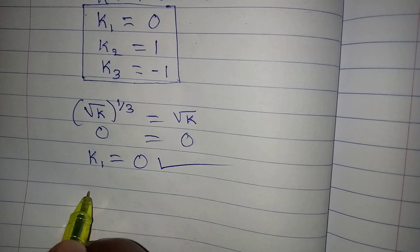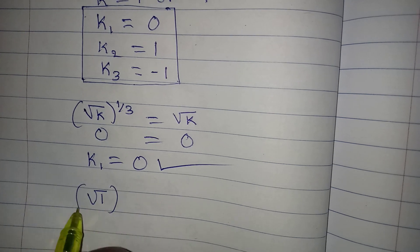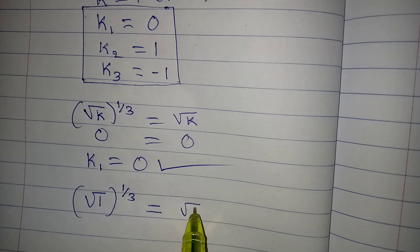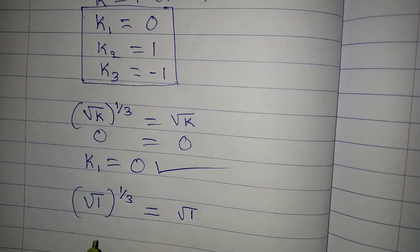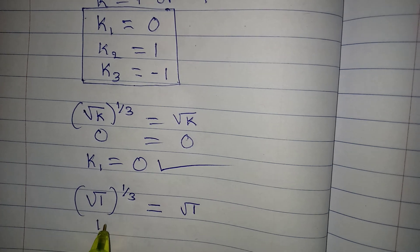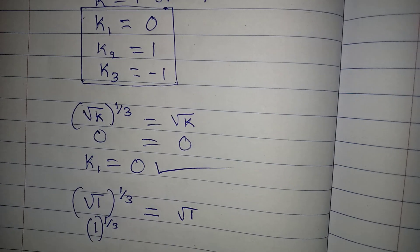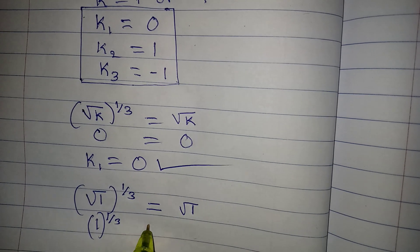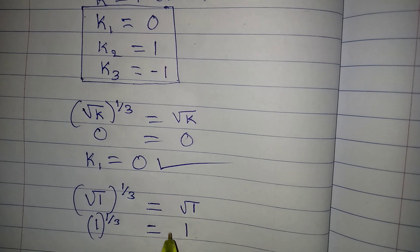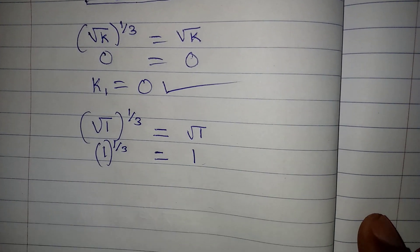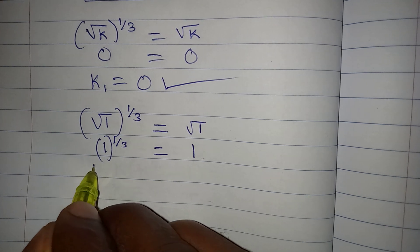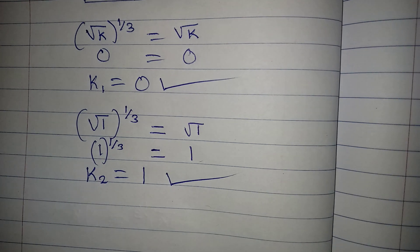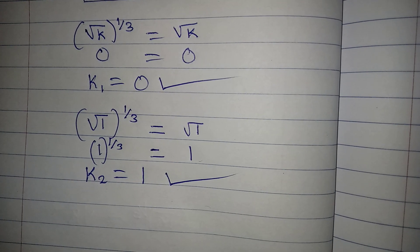For k₂ equals 1: we get the square root of 1 to the power of 1/3, which equals the square root of 1. The square root of 1 is 1, raised to the power of 3 gives the cube root of 1, which is still 1. This equals 1 on the right-hand side, so k₂ equals one satisfies the original equation.